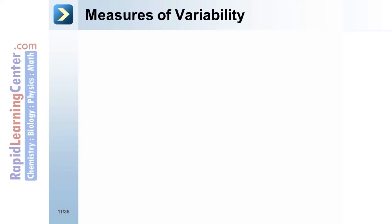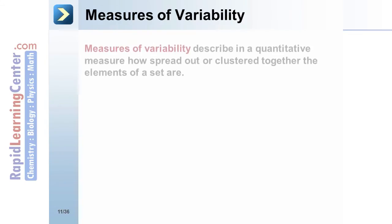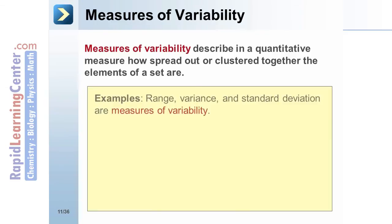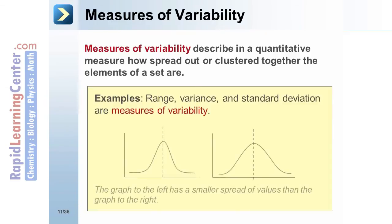Measures of Variability. Measures of variability describe in a quantitative measure how spread out or clustered together the elements of a set are. Examples of variability are range, variance, and standard deviation.